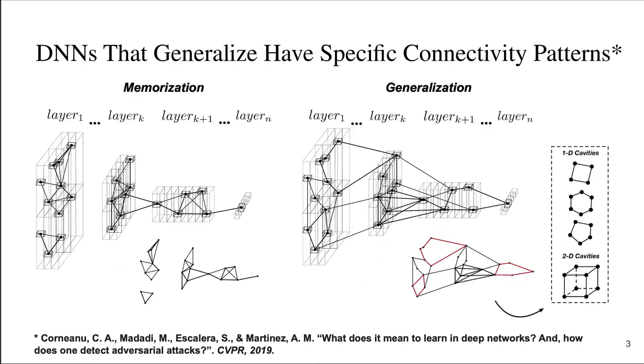Deep neural networks that generalize have specific functional connectivity patterns, which differ from those observed when the network memorizes training samples. As shown on the left, memorization is indicated by local activations of a small number of nodes in each layer. Think about this as the network using a tiny number of local parameters to memorize a sample, while using other local parameters to memorize another.